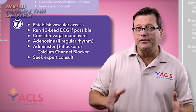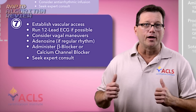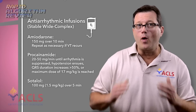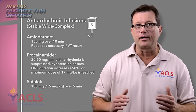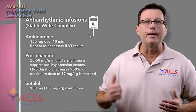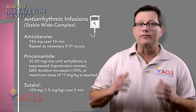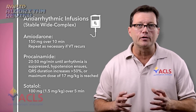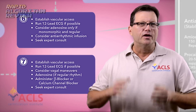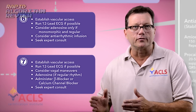Now, if adenosine doesn't work, consider a calcium channel blocker and get an expert involved quickly. If this is a wide complex tachycardia, our first drug up is amiodarone. Start an infusion of 150 milligrams over 10 minutes. Remember: stable tachycardias — drugs. Unstable tachycardias — immediate synchronized cardioversion.